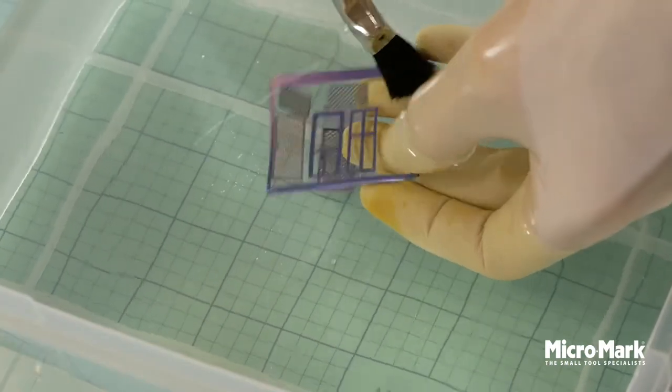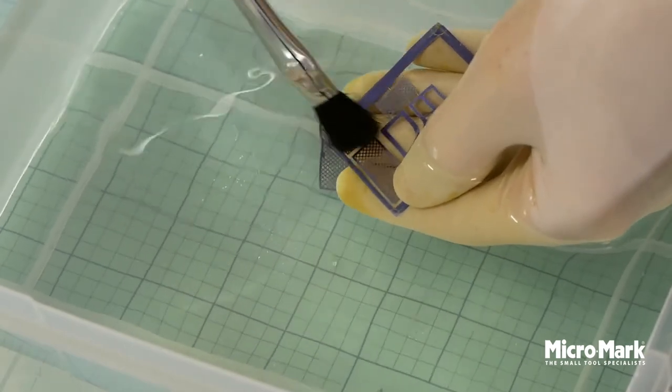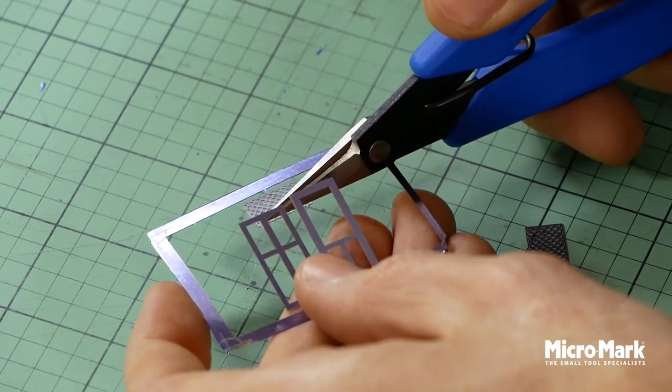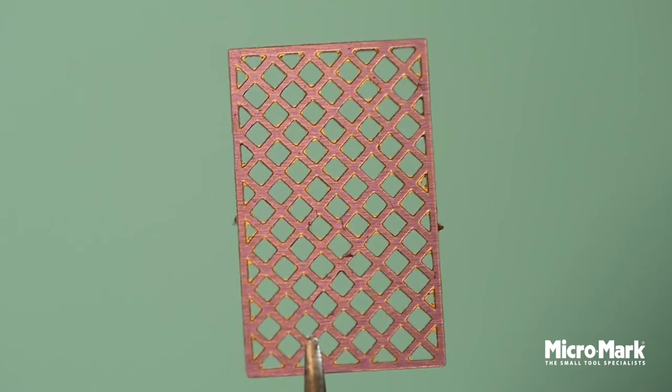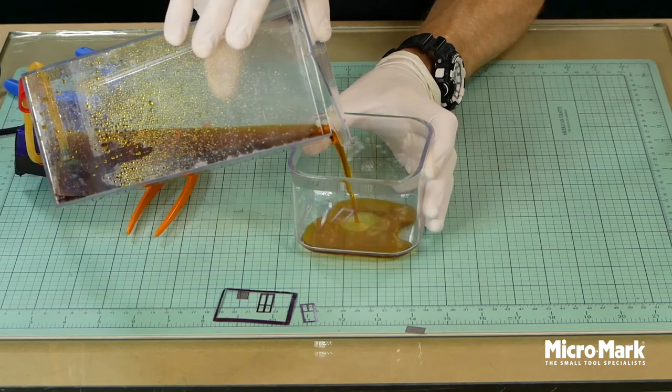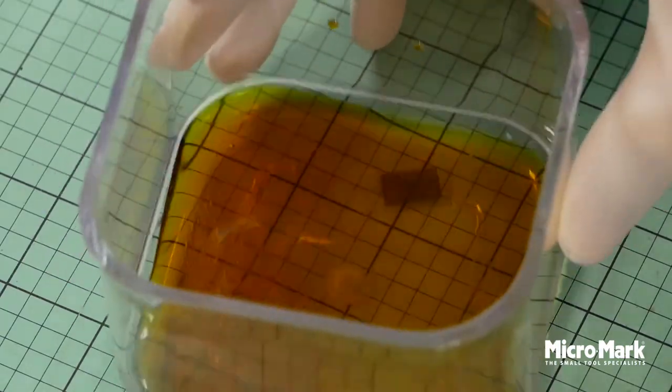You may find some parts are fully etched but others need just another minute or two. This is easily done by removing that part that needs additional etching and placing it in a smaller container with some of the etching fluid in it. Gently swish the etchant around until the part is fully etched.